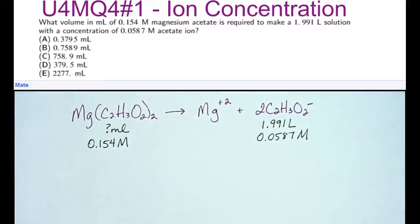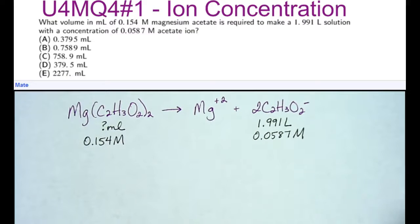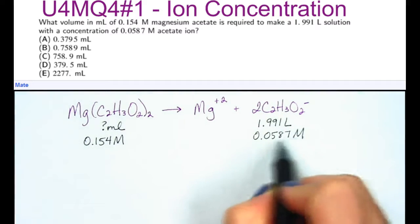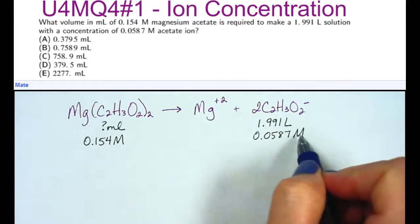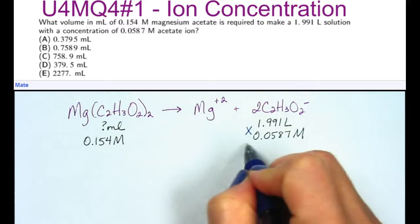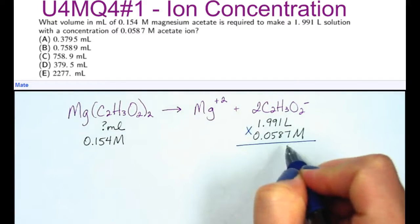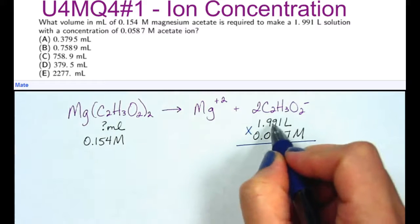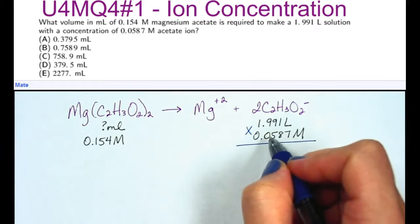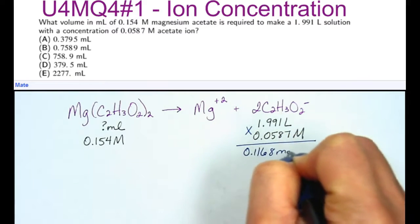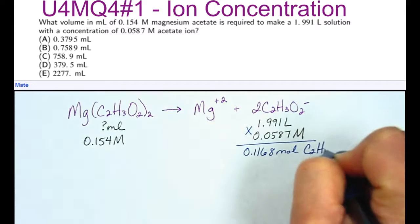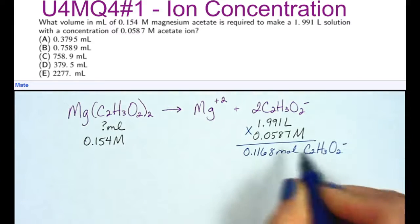So first you should note that you are given the volume and the molarity of the amount of acetate ion. So you always want to take a concentration, molar concentration, and multiply it times its volume in order to get the amount in moles. So these two multiplied together gives us 0.1168 moles of acetate ions.